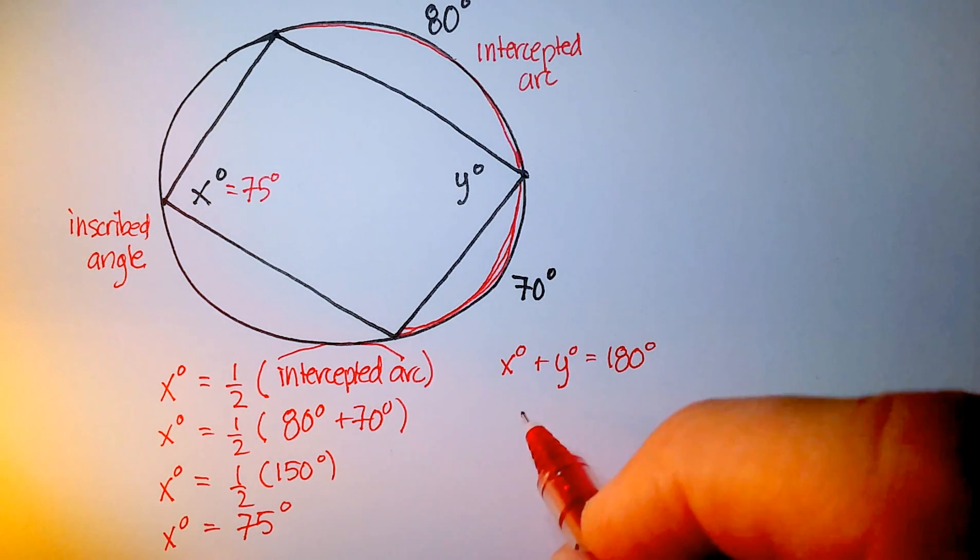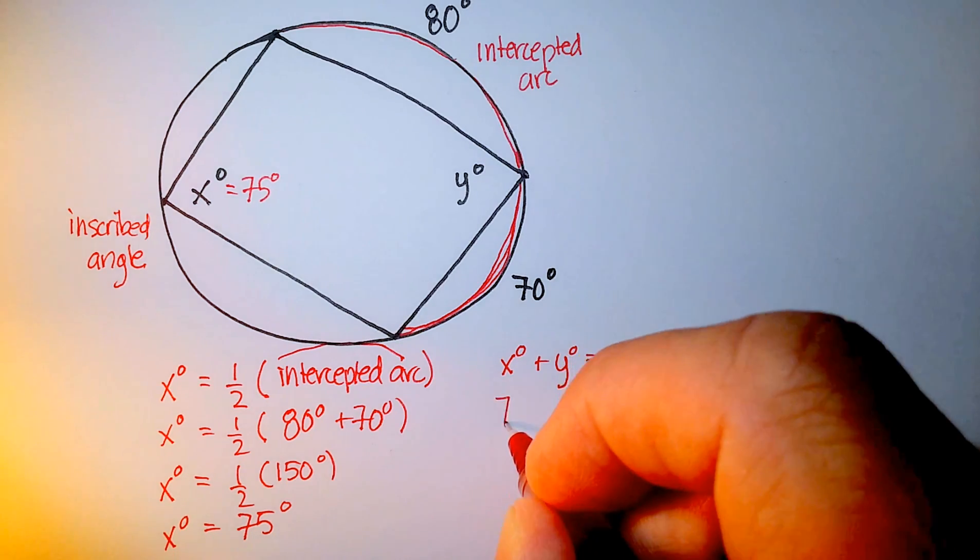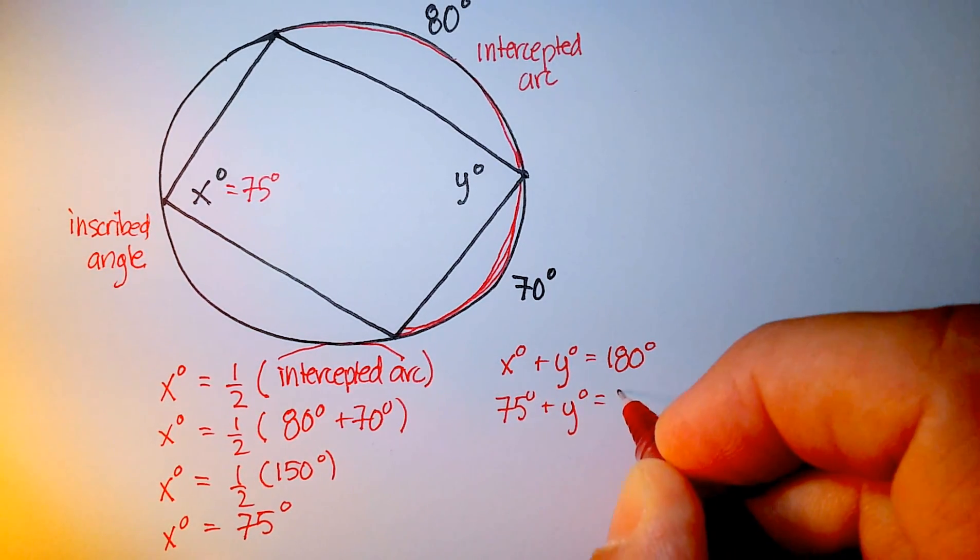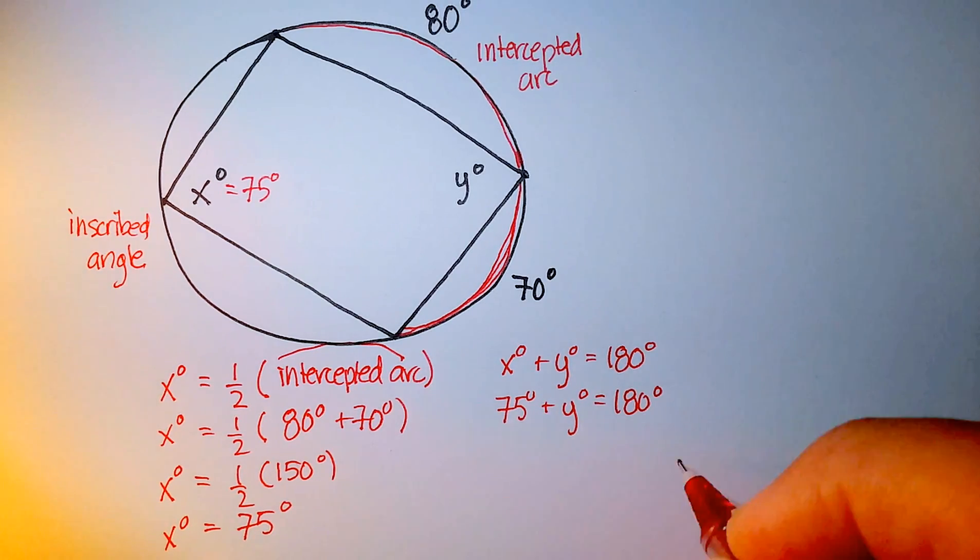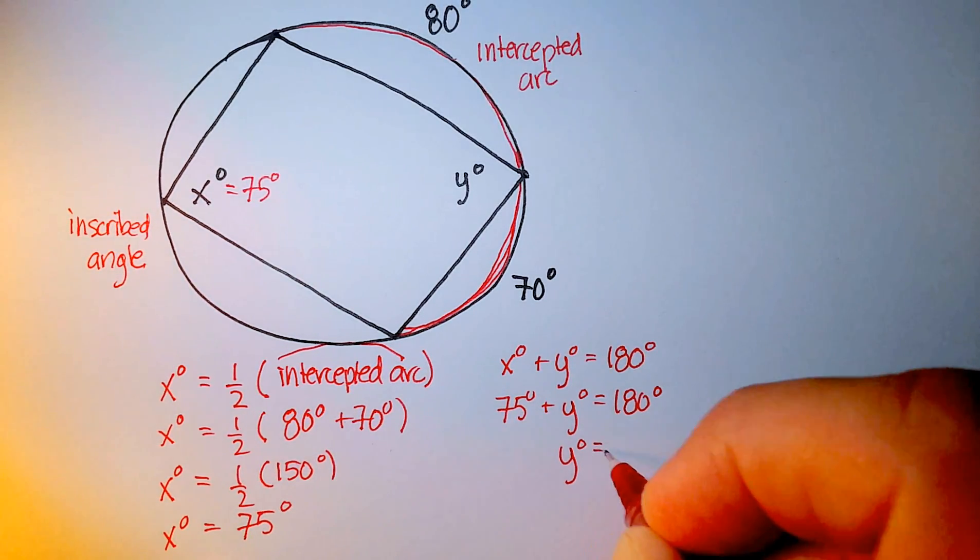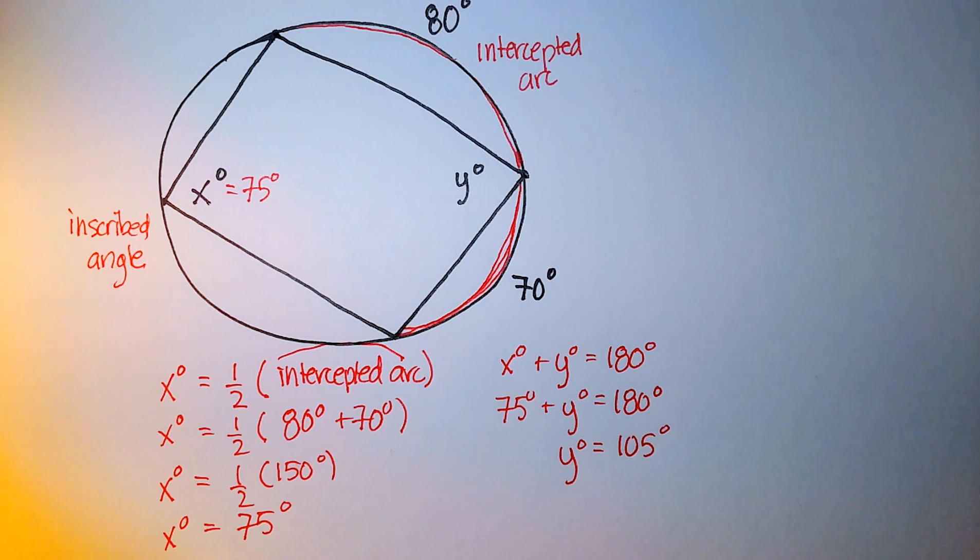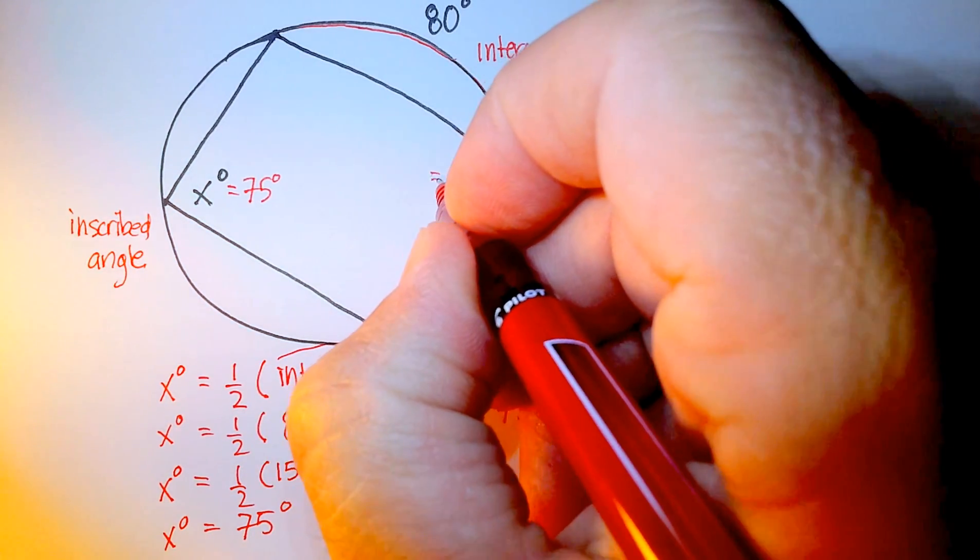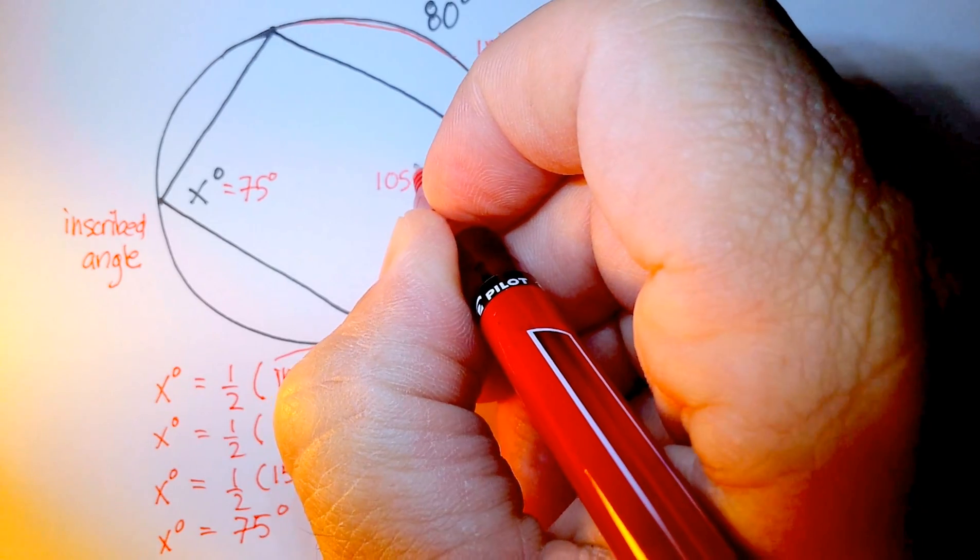So angle x plus angle y is going to be equal to 180 degrees. So if we substitute x with 75, subtract 75 from both sides, and you'll get angle y is equal to 105 degrees.